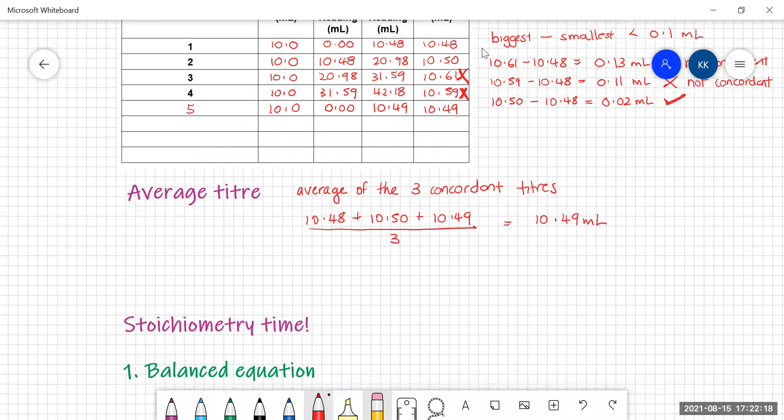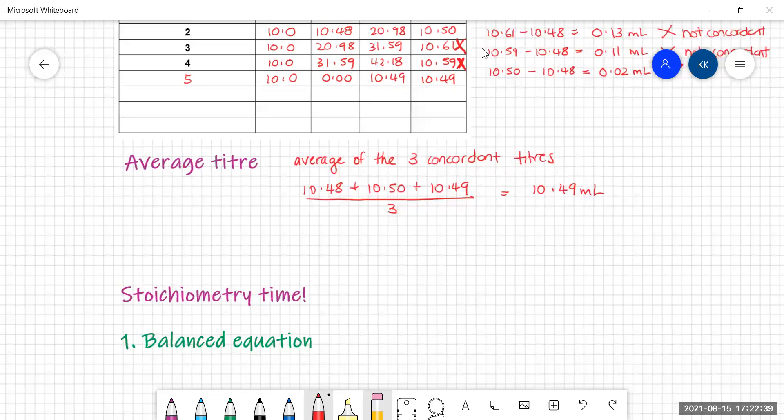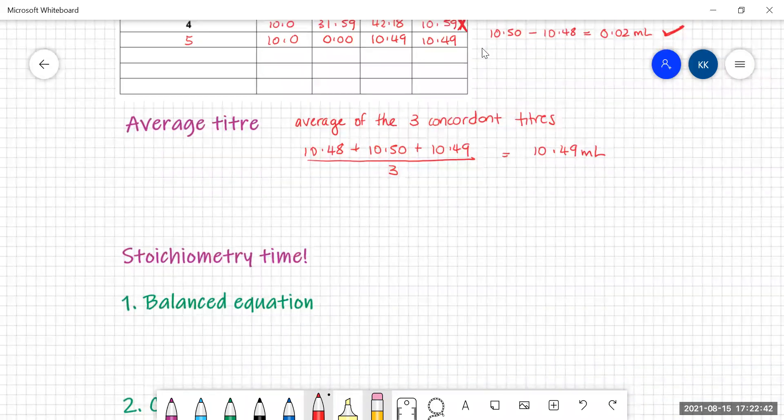And we don't include the ones that were outside of that concordant range, only the ones that are inside it. Once you've got three, give up. No need to go any further. You do not want to have five concordant titers. It's just going to waste time. And particularly if you're doing an exam in this, you do not want to be wasting time.